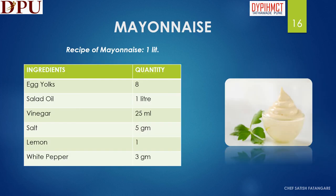In this slide we will discuss the ingredients and the recipe of mayonnaise sauce. The ingredients required to prepare mayonnaise sauce are egg yolks, salad oil, vinegar, salt, lemon and white pepper.